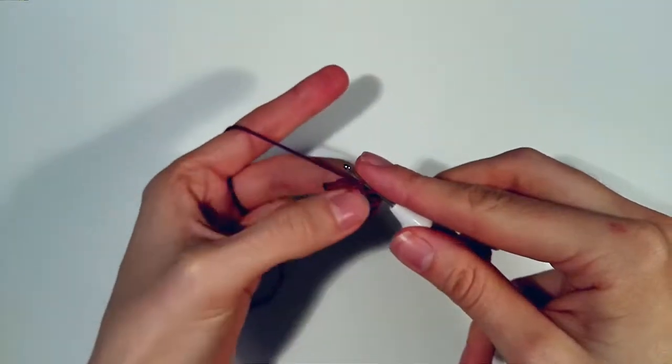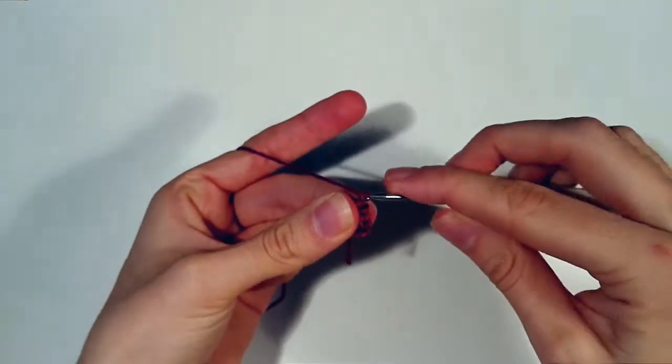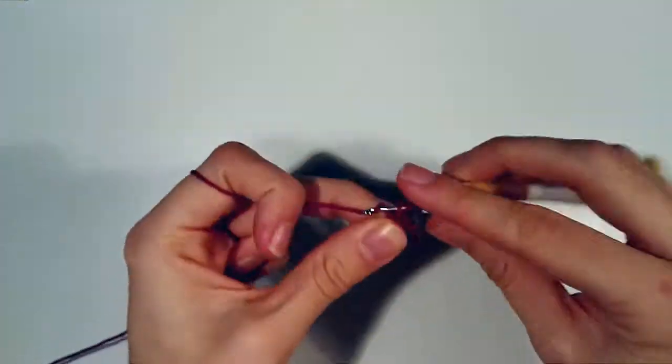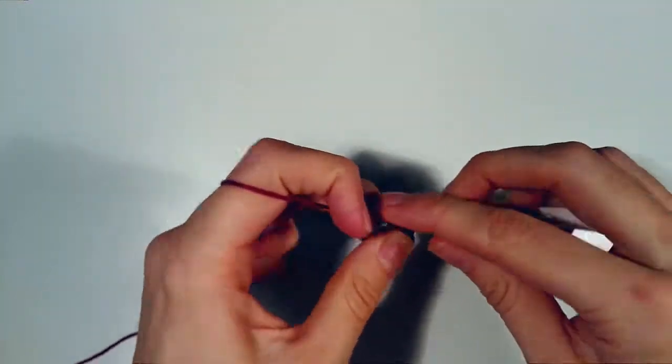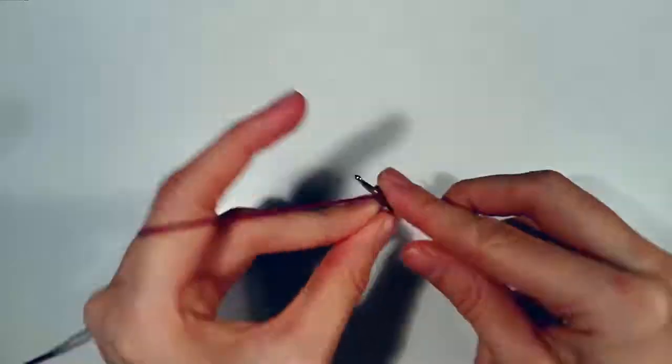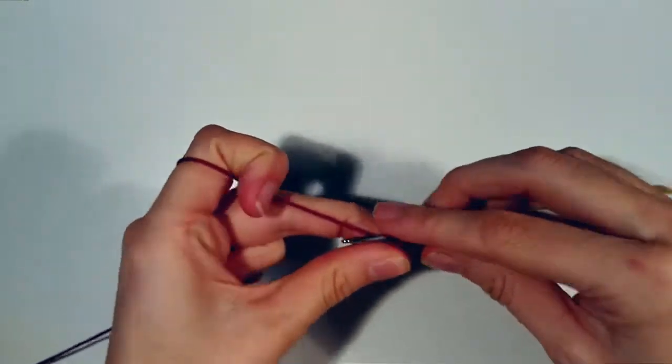So we're going to repeat this four more times. So one and two, double crochet, and chain two, and our slip stitch.